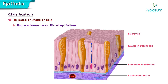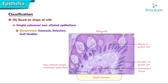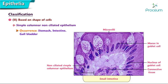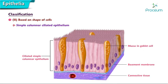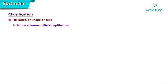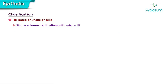Simple columnar non-ciliated epithelium: the cells are tall and column-like with oval elongated nuclei near the basement membrane. Occurrence is in the stomach, intestine, and gallbladder; functions are absorption and secretion. Simple columnar ciliated epithelium: cells are tall and column-like with cilia. Occurrence is in the uterine tube; functions are transport and secretion.